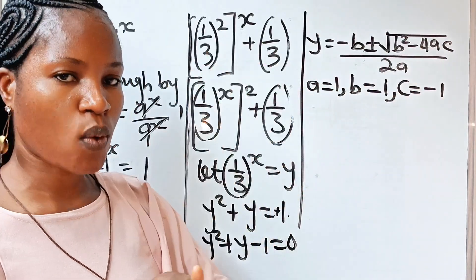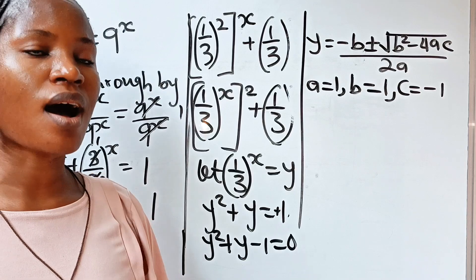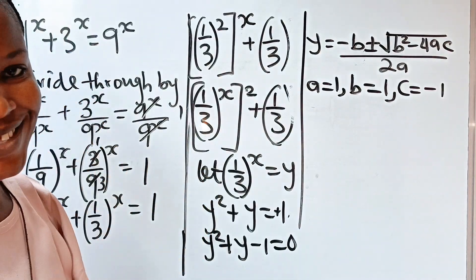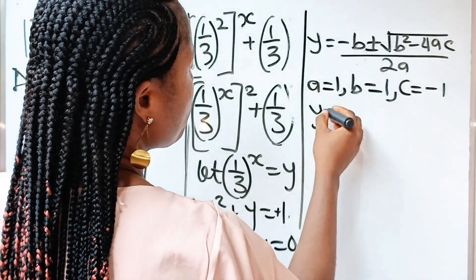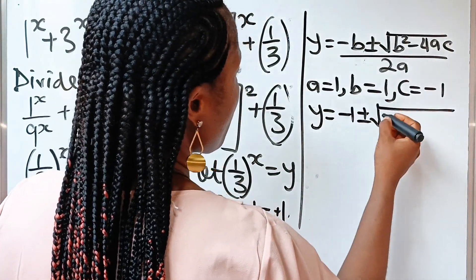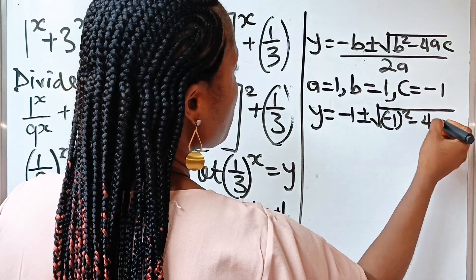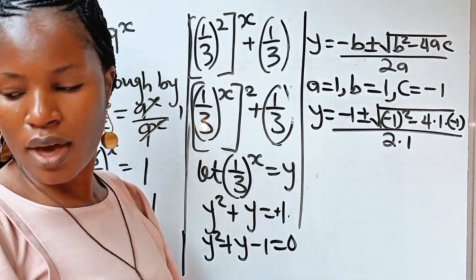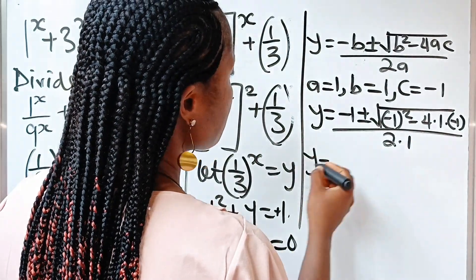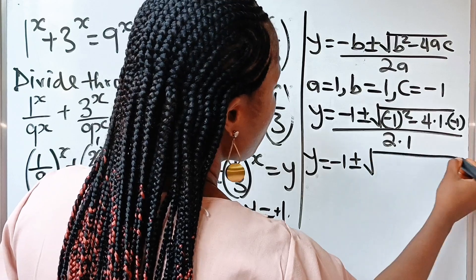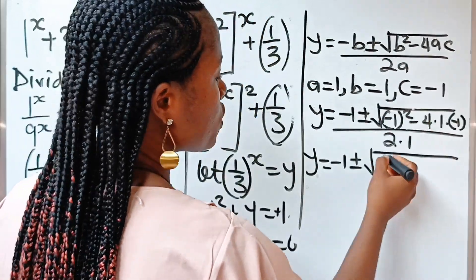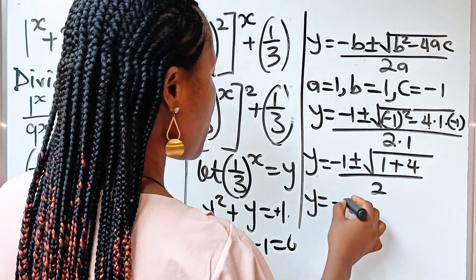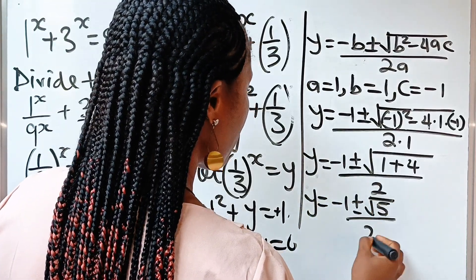Now let us substitute this in to get y. Remember that we are not looking for the value of y — we are looking for the value of x, and we are going to get that from y, so watch to the end. We have y equal to minus 1 plus or minus square root of minus 1 squared minus 4 multiplied by 1 multiplied by minus 1, everything divided by 2 multiplied by 1. Now, minus 1 squared is 1, and minus minus is plus, so 4 times 1 is 4. Divided by 2. So we have y equals minus 1 plus or minus square root of 5, divided by 2.